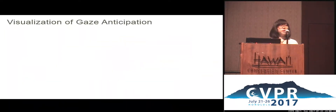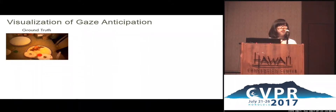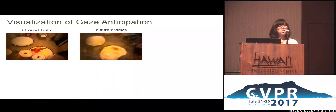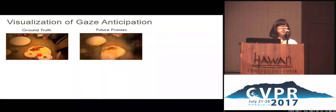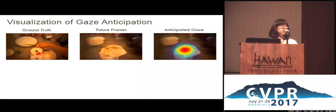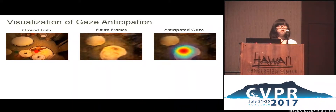Before I share more about how our architecture works, I'd like to give you a taste of how our anticipated gaze will look like in the next two to three seconds. On the left, we have the ground truth video clip. This man is preparing for a meal and the red dots are the gaze locations recorded from our eye trackers. In the middle is the future frame — this is how our algorithm thinks what the future may look like. On the right, it's the same future frames but with an overlay. The rainbow color denotes the anticipated gaze location from our algorithm.